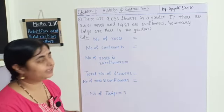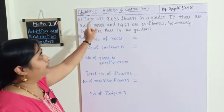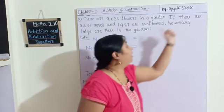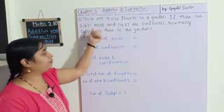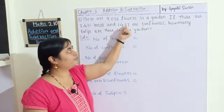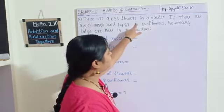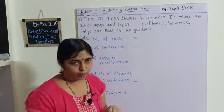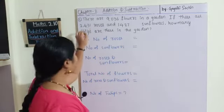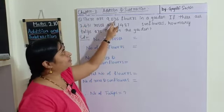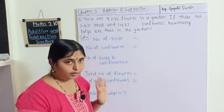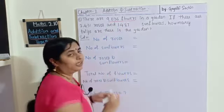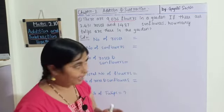Let's see the first example. There are 9036 flowers in a garden. If there are 2431 roses and 1487 sunflowers, how many tulips are there in the garden? So what we understand from this problem: the total number of flowers in the garden is 9036.